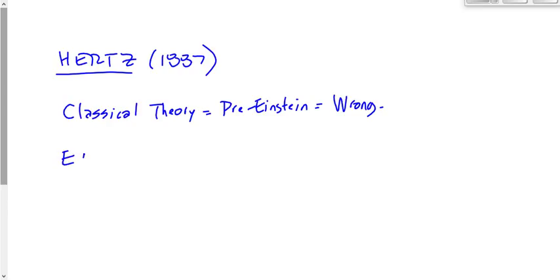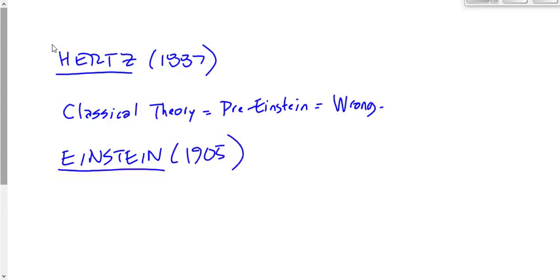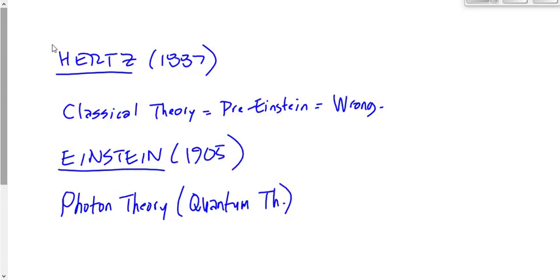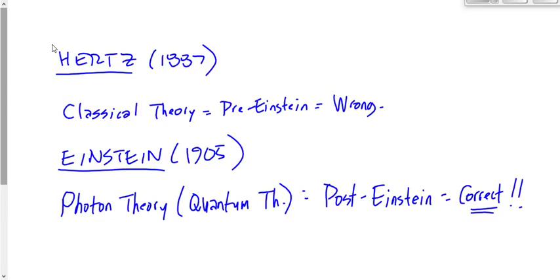Fast forward 18 years to Einstein in 1905. This is the beginnings of modern physics — we sometimes call it quantum physics or photon theory. It's Einstein and then after Einstein is photon or quantum theory — post-Einstein. This is correct. It explains the observations that were made after 1887 with the photoelectric effect very, very well.